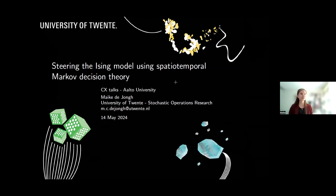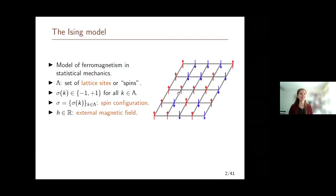As you can see from my title, my talk will involve the Ising model and also Markov decision theory. So what I first want to do is just give a little bit of an introduction into both these topics, such that if you're not familiar with them, you can make sense of the rest of my talk. Starting with the Ising model — the Ising model, you may have heard of it. It's a very famous model in statistical mechanics.